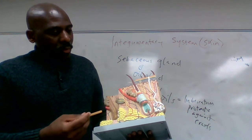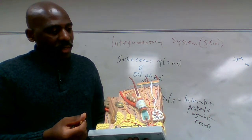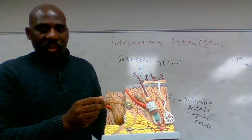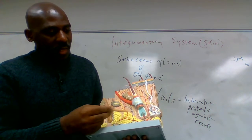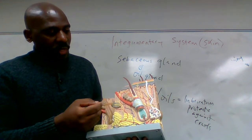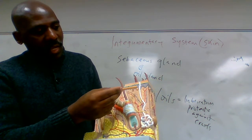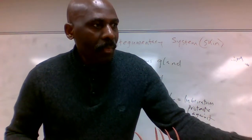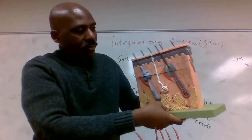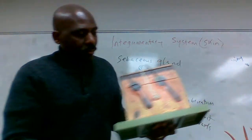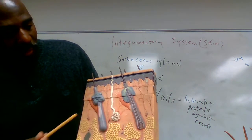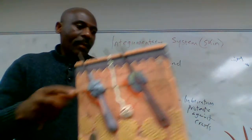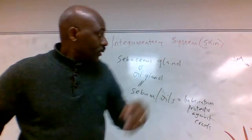The next skin appendage is the nerve cell. These are nerve fibers that end in nerve cells. You can see one nerve cell here, another here, and another one over there on this other model as well.